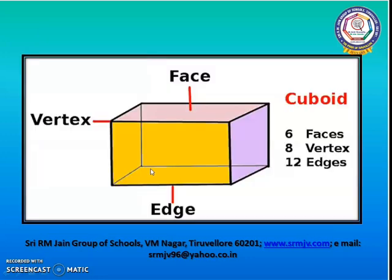This is a cuboid. Cuboid has eight corners, six faces, and twelve sides. Cuboid looks like a brick.